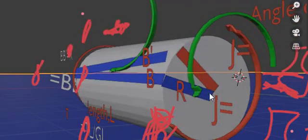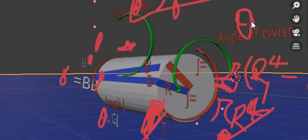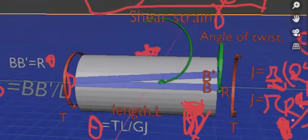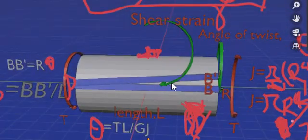This creates an angle of twist theta at the center of the circle, while the plane section moves from B to B'.